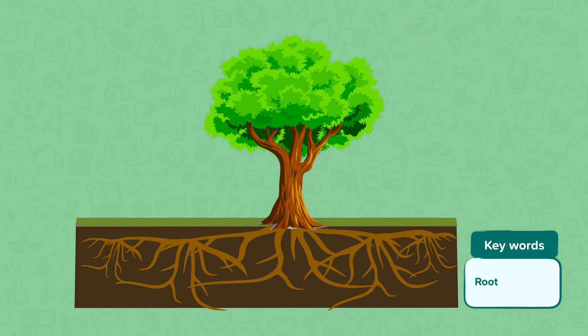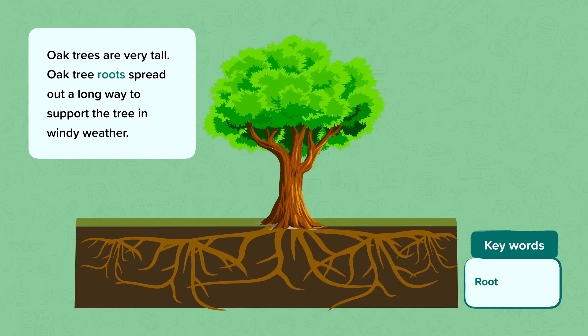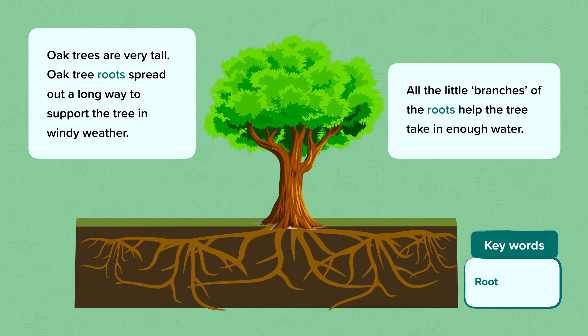Remember, different plants need different amounts of things. An oak tree is very tall so its roots spread far under the ground. The roots anchor the plant in place, which is important when there is windy weather so it doesn't blow down. The roots also have lots of little branches, which helps the oak tree take up enough water.